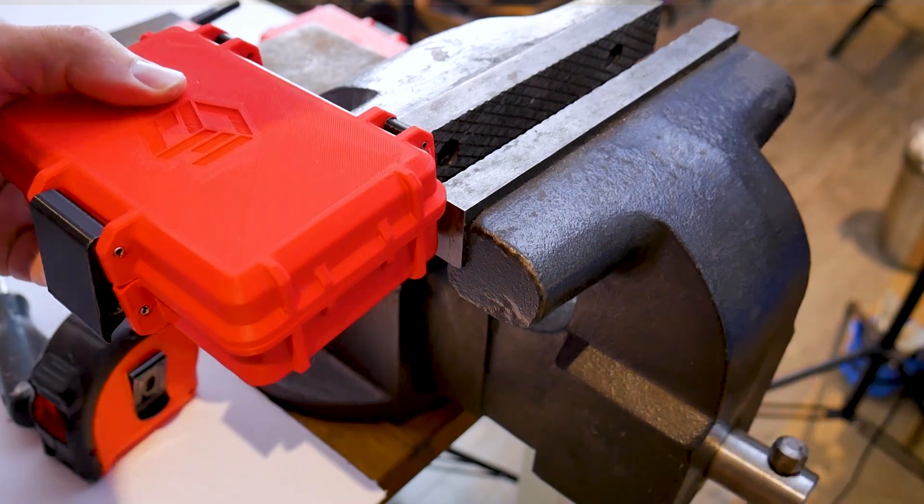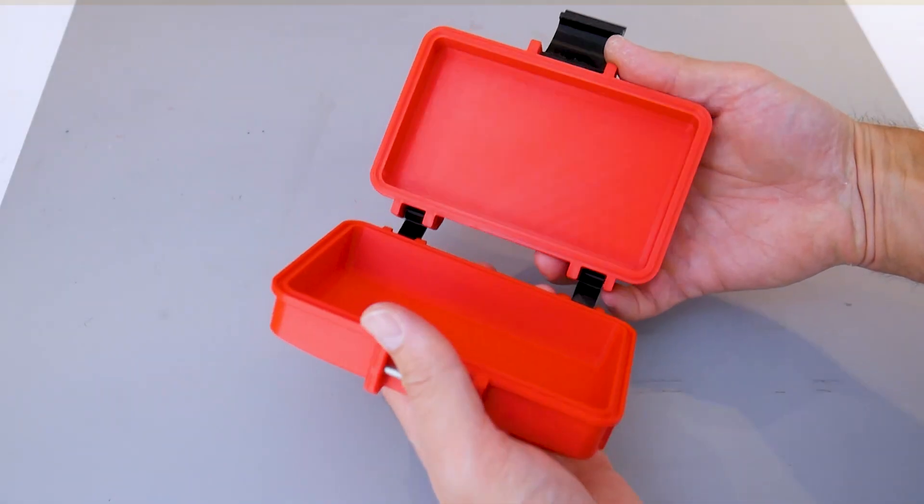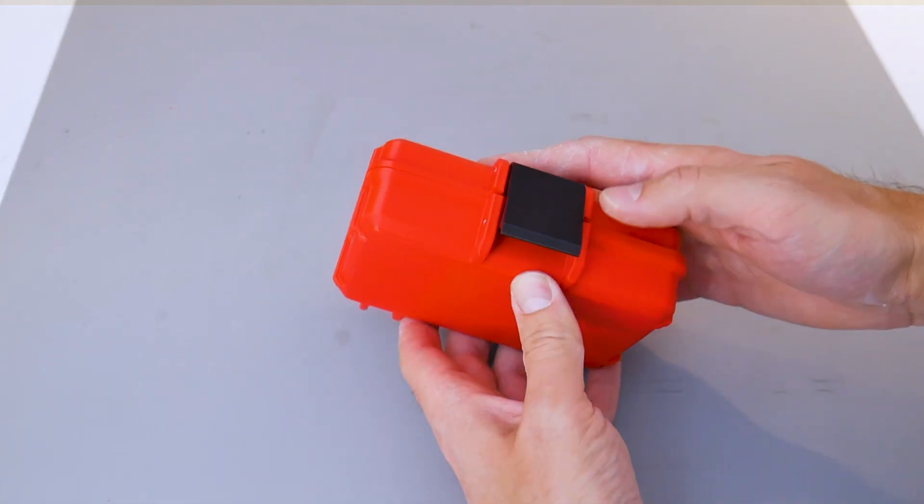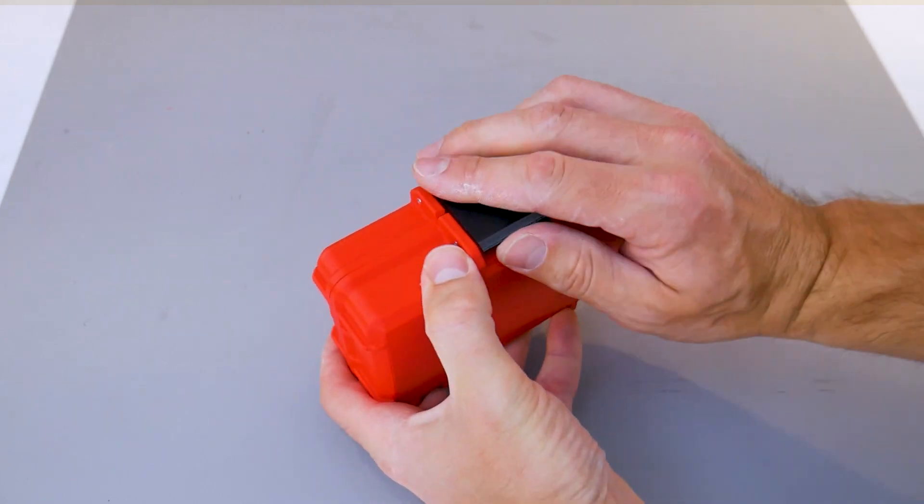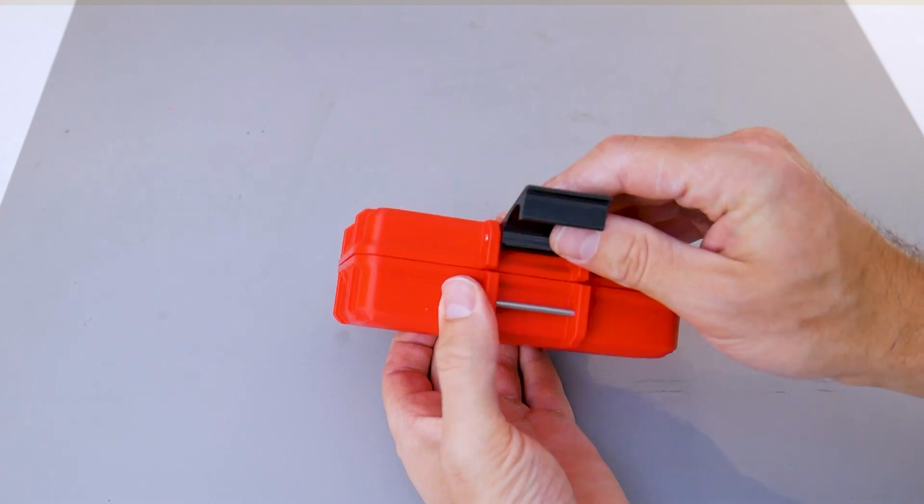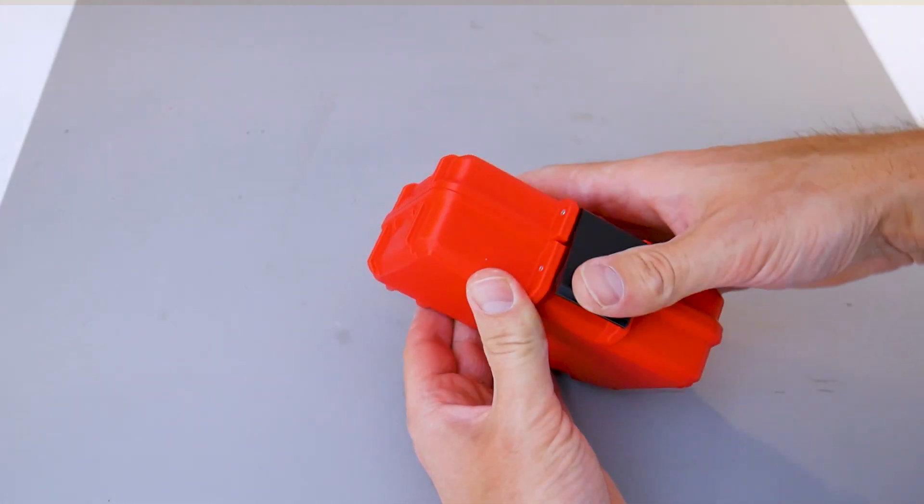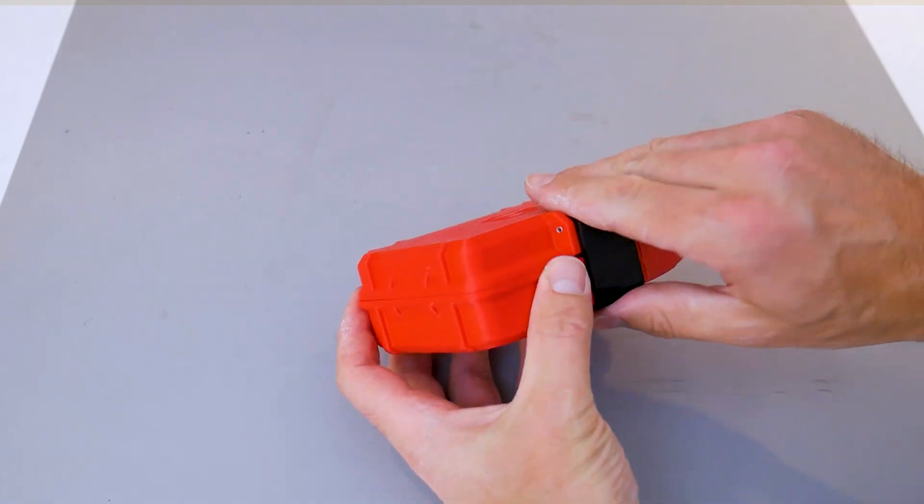Once you're done, the case should be connected, both top and bottom half. Go ahead and test out the snap fit latch on the front. If your printer tolerances are any good, it should be a nice tight fit. Similarly, when opening the case you should have to apply a pretty reasonable amount of force to get it open. I've dropped several of these cases now and none of them have popped open on their own, so the fit of the latch is very secure.